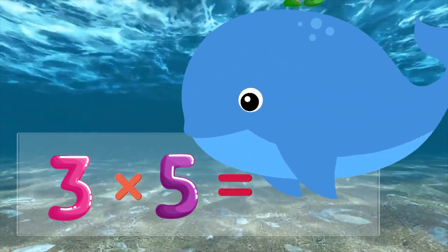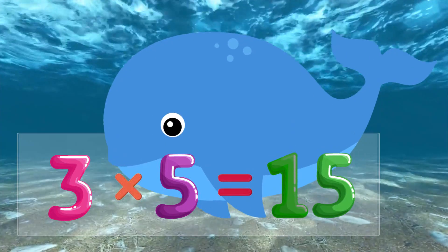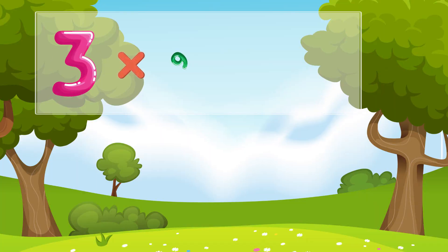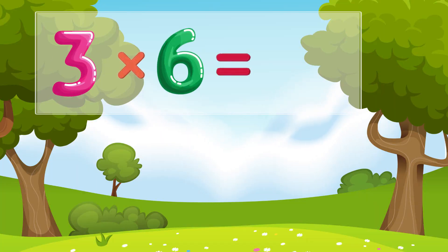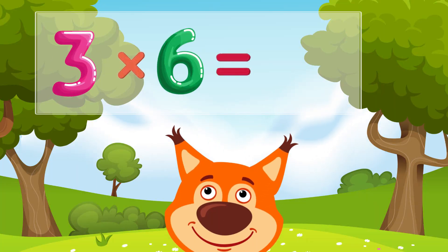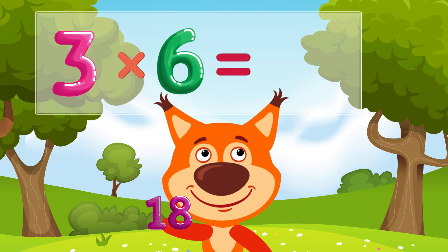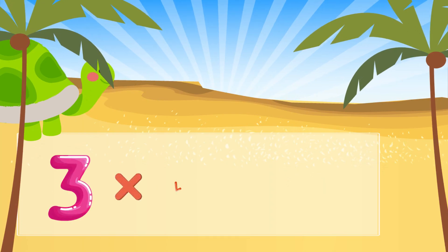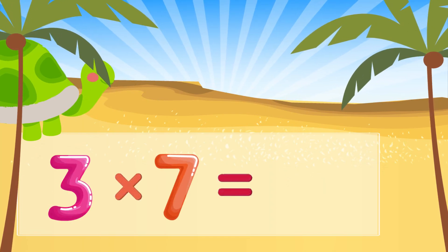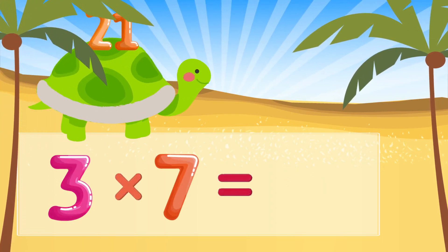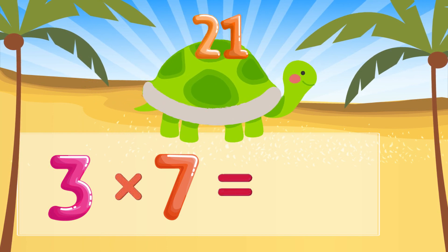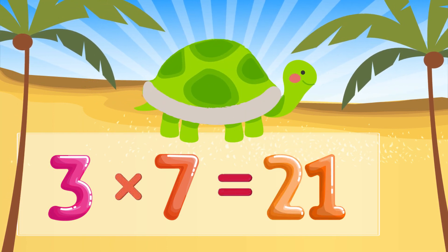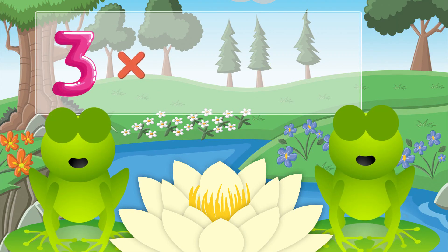Three times five is fifteen. Three times six is eighteen. Three times seven is twenty-one.